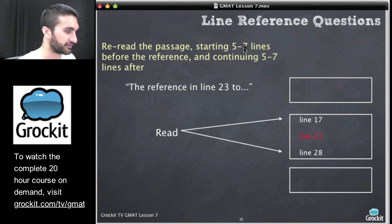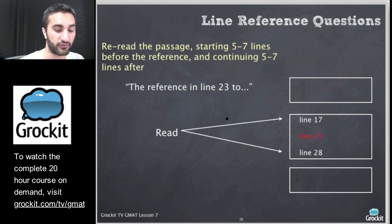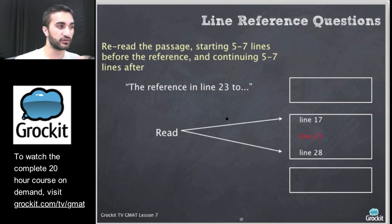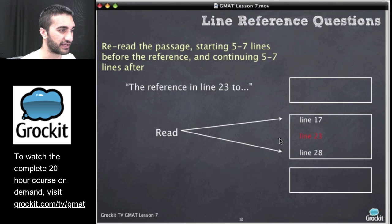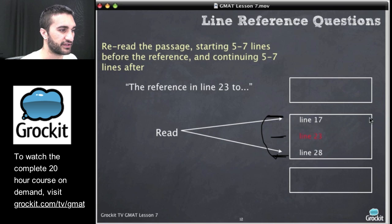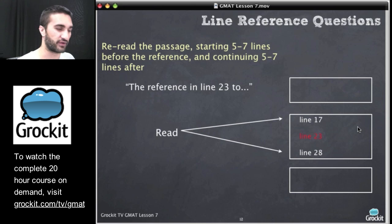On passages that have line references, how do we read those? If the first question we get on a reading comp passage on the GMAT is a line reference question, I'm not going to read the whole passage to answer it. I'll do that when I need to. So if I get a line reference question about something on line 23, I want to start about five to seven lines before it and continue reading to about five to seven lines after it. The answer is usually quite proximate to the line reference.